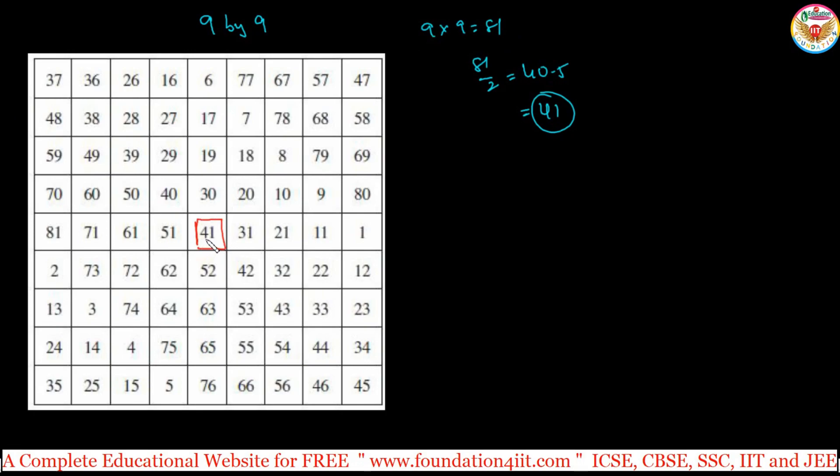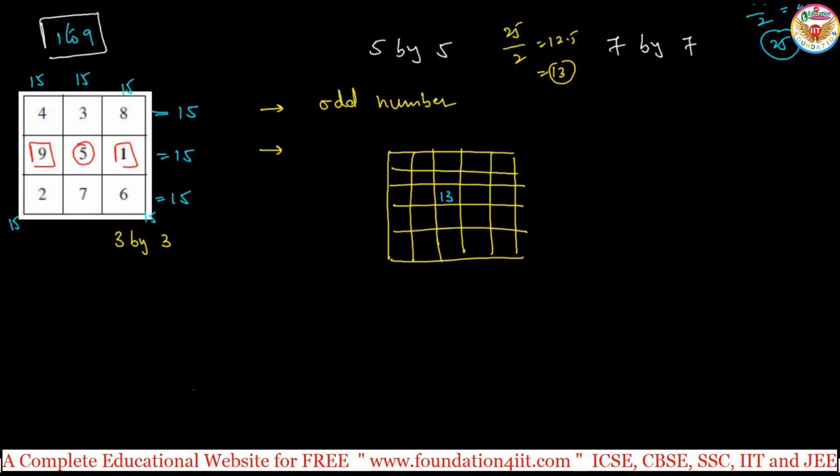And they used 1 to 81 numbers. Then each row or each column or each diagonal, how much is supposed to be? You can see, 15 means middle number is 5 and 3 rows or 3 columns. Into 3 you can do, so 15.